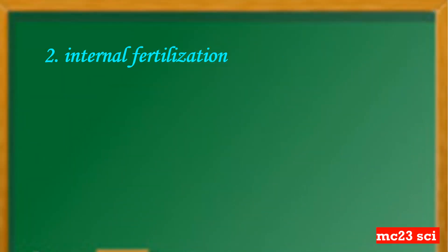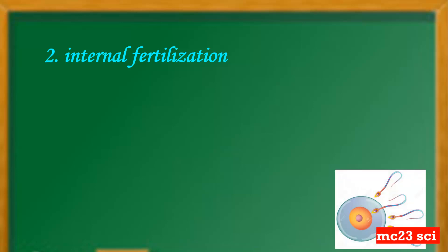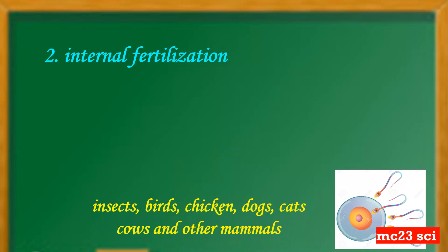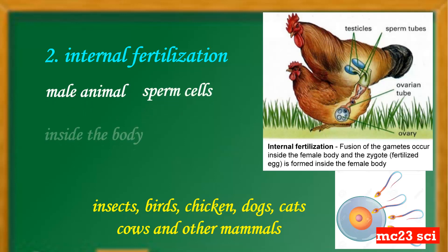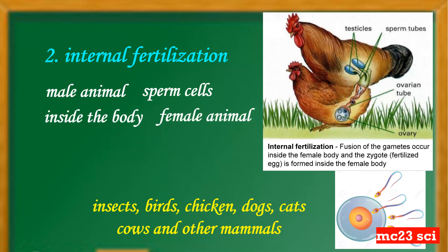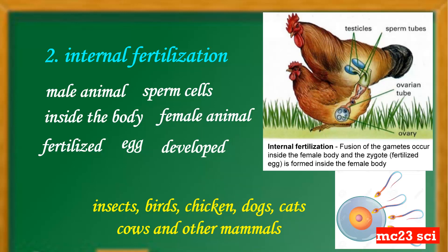Number two is internal fertilization. This happens in animals like birds, insects, chickens, dogs, cats, cows, and other mammals. Take a look at the picture — this is an example of internal fertilization, wherein the male animal releases sperm cells inside the body of the female animal to fertilize the egg, and the egg develops inside the female animal and is born alive or laid as eggs.